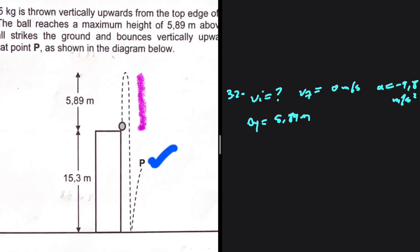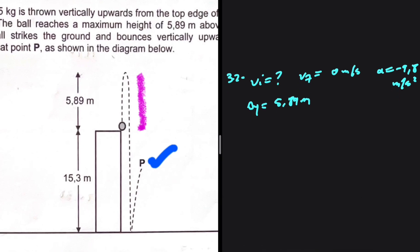Our acceleration, taking up as positive, will be negative — minus 9.8 meters per second squared. We don't have delta T, but we have delta Y which equals 5.89 meters. That is the displacement from the time it is projected until maximum height — 5.89, not 5.89 plus 15.3. We're only considering the part of the motion from projection to maximum height. Looking at these variables and wanting to find VI, the equation to use is VF² = VI² + 2A·ΔY.